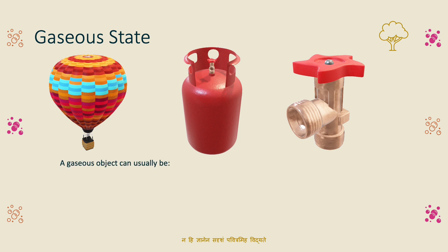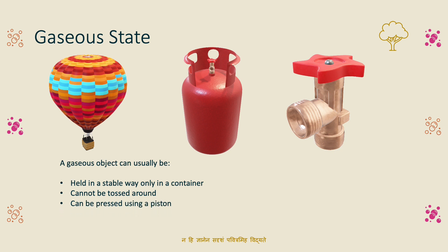Air is another example of the gaseous state. A gaseous object is stable when kept in a closed container — for example, one jar or a gas cylinder with a piston that can be compressed.